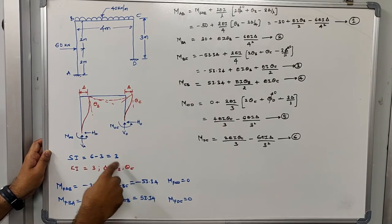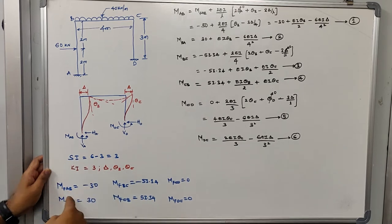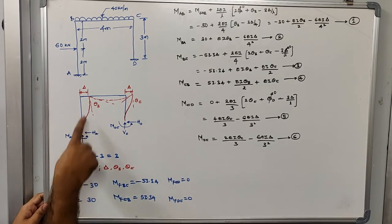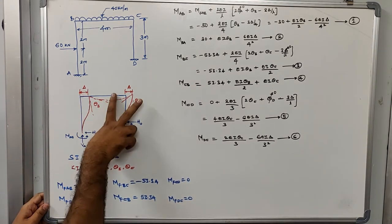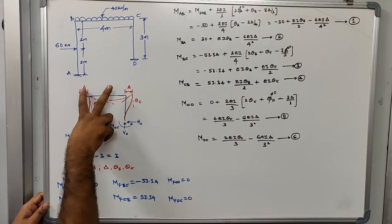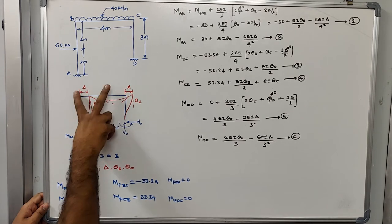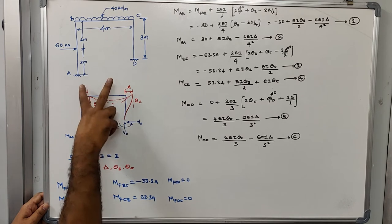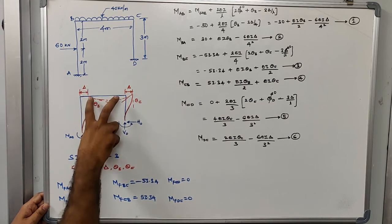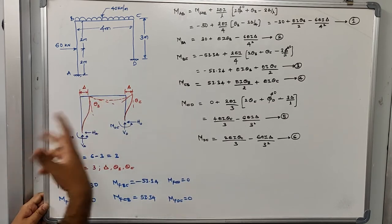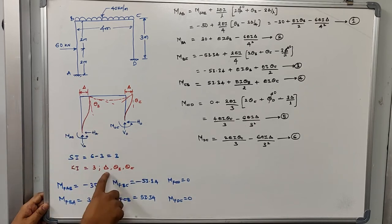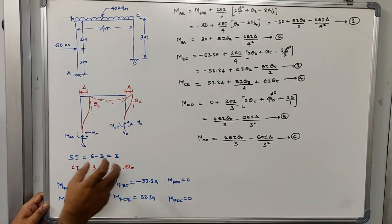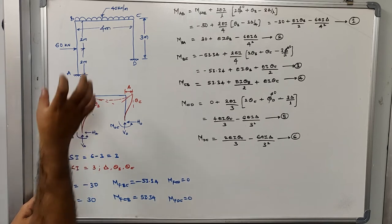Six reactions minus three gives three — so the static indeterminacy is three. For kinematic indeterminacy: the structure sways, and the translation value of that sway is considered to be delta. At the two internal joints, rotation takes place, so delta, theta_B, and theta_C are the three kinematic indeterminacies of this structure.